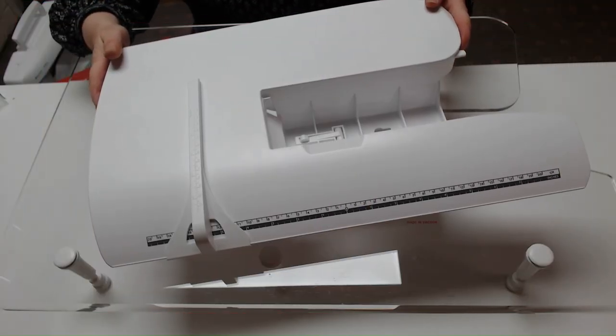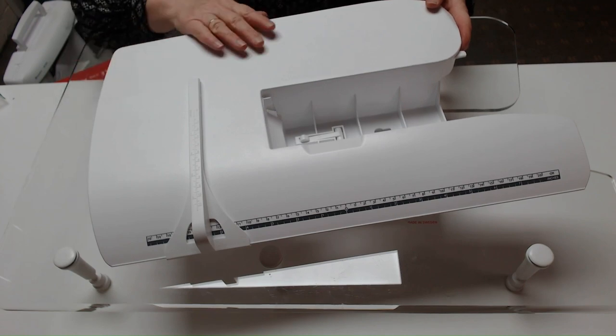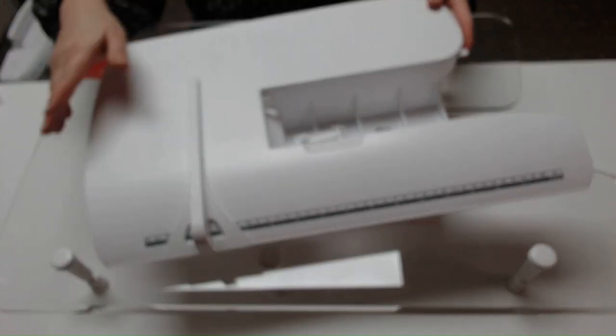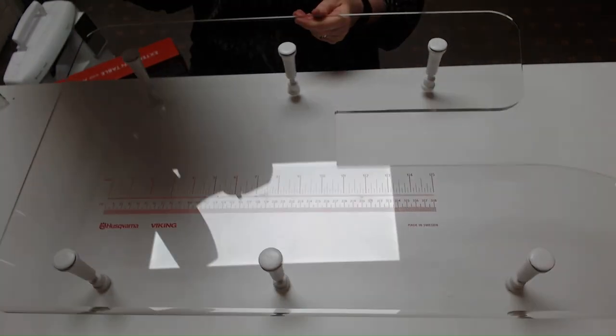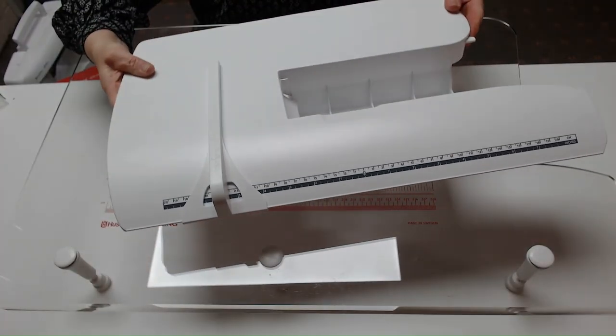There are two types of extension tables available for the Husqvarna Viking machine. There's this white plastic one with a guide, and then there's a clear table as well. Let me explain the differences.